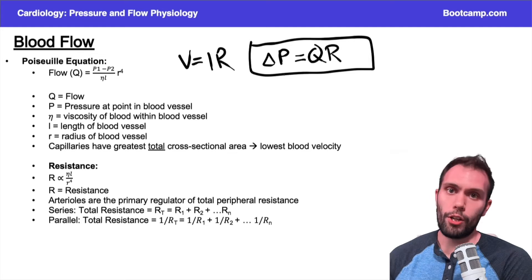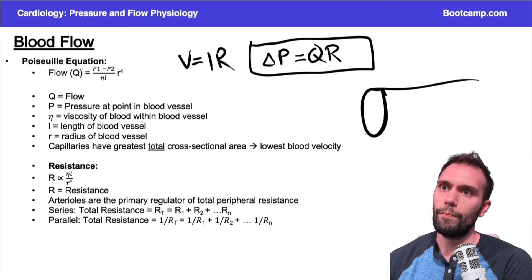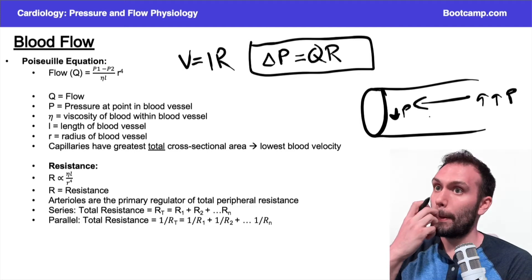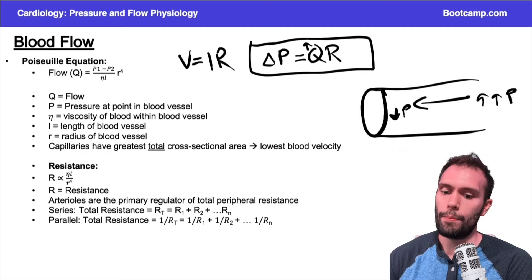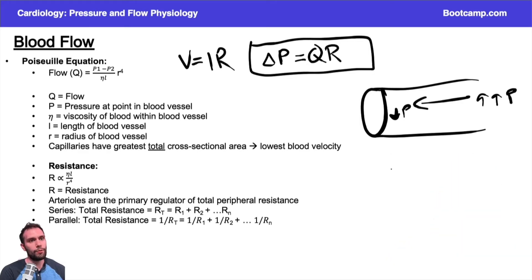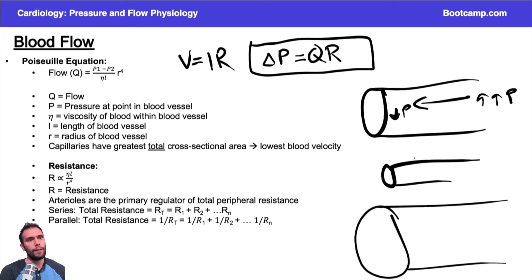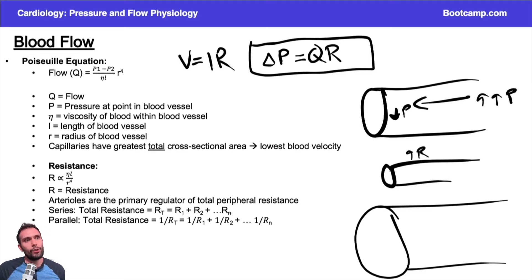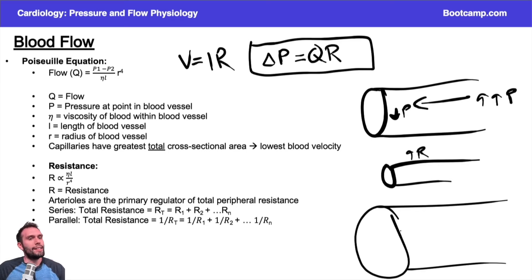The idea here is: if I have a bigger pressure gradient — say one side of a tube has really high pressure and the other side has low pressure — blood flow is going to go toward the side of lower pressure. There's going to be higher flow with a bigger gradient. If there's more resistance in a vessel — for example, a really tiny vessel versus a really big vessel — the tiny vessel will have higher resistance. Resistance is primarily associated with the radius, and it's inversely proportional: as I decrease the radius, resistance goes up.